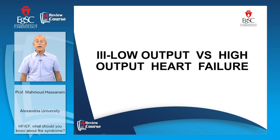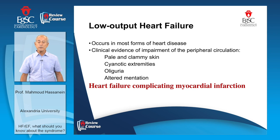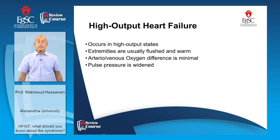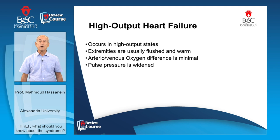The third phenotype is low output versus high output heart failure. Low output heart failure is the most common type — for example, heart failure complicating acute myocardial infarction. The skin is cool and clammy, there are cyanotic extremities, oliguria, and altered mentation. High output heart failure is less common, occurring in high output states. Extremities are usually warm and flushed, arteriovenous oxygen difference is minimal due to hyperkinetic circulation, and pulse pressure is widened. High cardiac output states include thyrotoxicosis, severe anemia, arteriovenous fistula, beriberi, Paget's disease of bone, pregnancy, and hepatic cirrhosis.